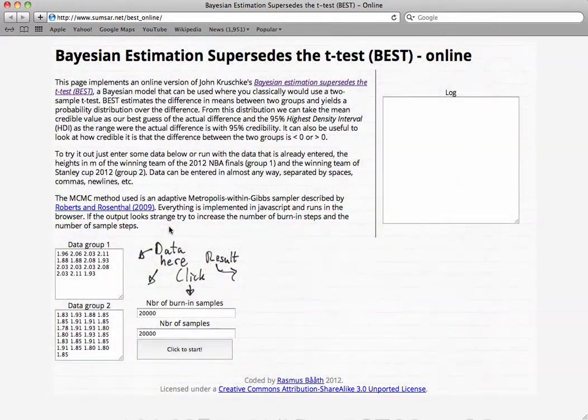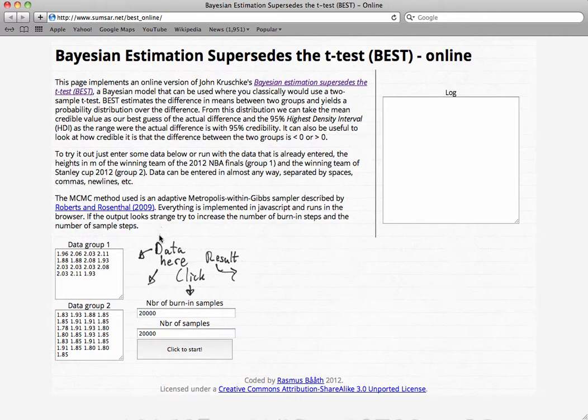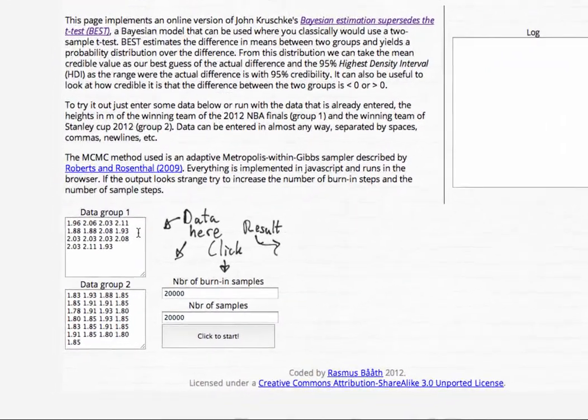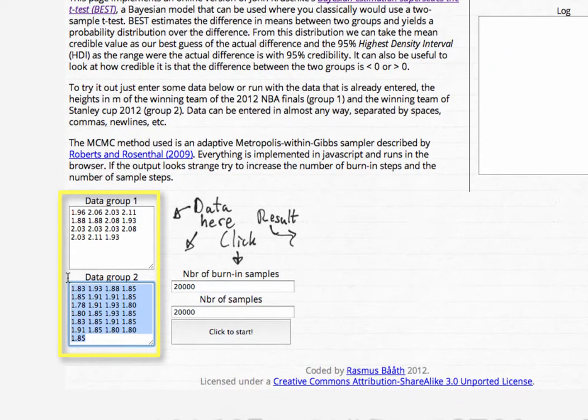To show you this, here's a web page created by Rasmus Bååth, which allows you to look at this interactively. Here we have more or less arbitrary groups of data, and we're basically carrying out the equivalent of an NHST independent samples t-test. These are just heights from different teams. I think the top one is a basketball team, and the bottom one is a hockey team.